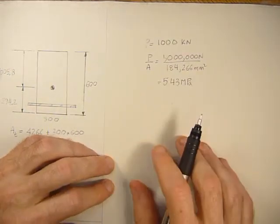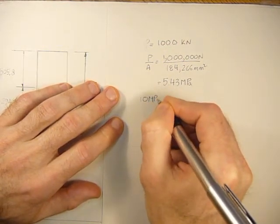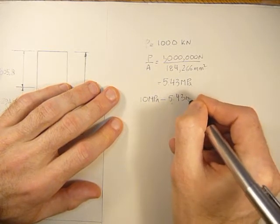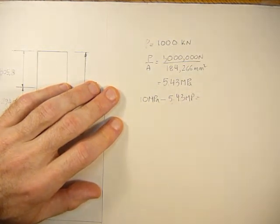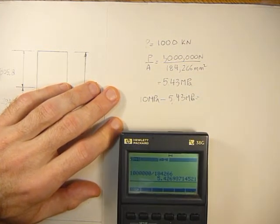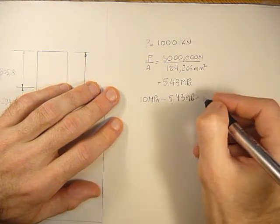If we have 10 MPa minus the 5.43 MPa, we'll have the stress in the top fibers for the pure bending part of the superposition, which comes out to be 4.57 MPa.